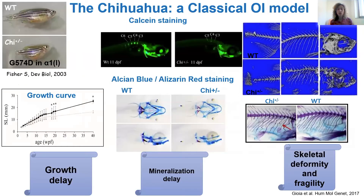For the project, I use two zebrafish models that I already have in my lab and have characterized as good models for the dominant form of osteogenesis imperfecta. The first one is the Chihuahua, with a mutation in the alpha-1 chain of type 1 collagen, reproducing a growth delay, hypomineralization, and skeletal deformity — which are common features in human OI.